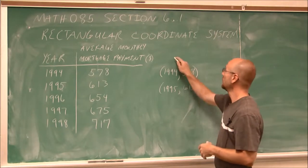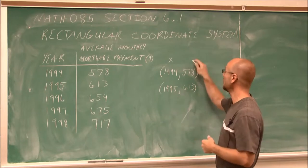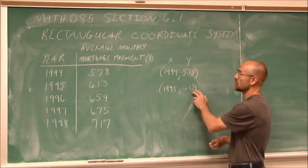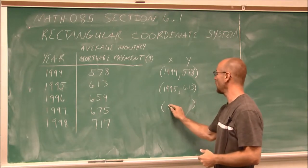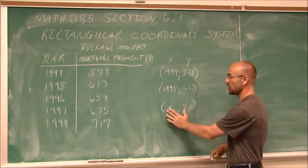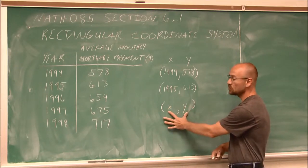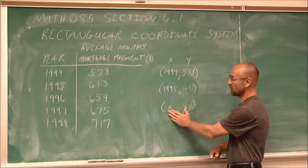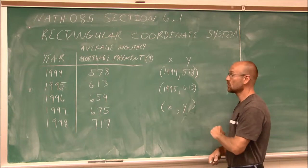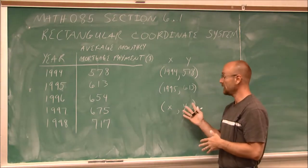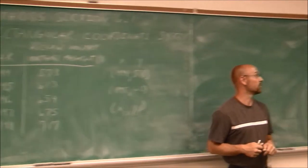If we put them on a graph, maybe this is one variable that changes each year, and this is some other variable. So we're comparing two things. We can write them as what we call ordered pairs, and ordered pairs are always one variable and the other — x and y. This is an important concept because we have to know which variable is which: x, y. So we're going to move to another board and take a look at a Cartesian coordinate plane.